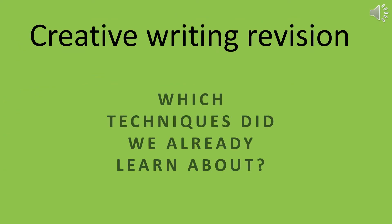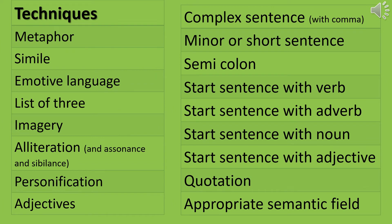We already learnt about some creative writing techniques — can you remember any? These are some of the creative writing techniques we've learnt about, and also ways of mixing your writing up to make it more interesting and less tedious to read so that all the sentences aren't the same. You could use metaphor, simile, emotive language, lists of three, imagery, alliteration, assonance and sibilance, personification, adjectives (especially powerful ones), complex sentences with commas, minor or short sentences for effect, semicolons (don't forget they can replace joining words), start a sentence with a verb, an adverb, a noun, or an adjective. Use a quotation, and make sure your words fit into the right semantic field and are appropriate to your topic.